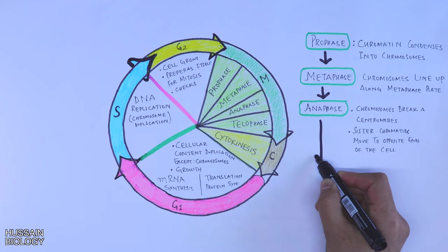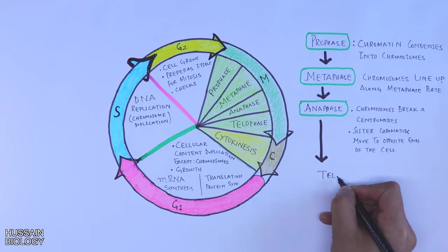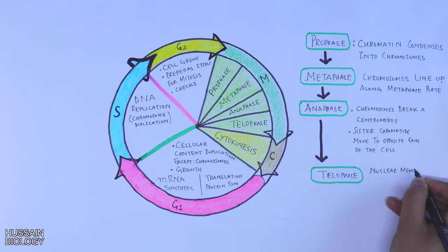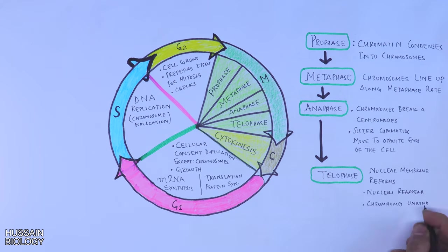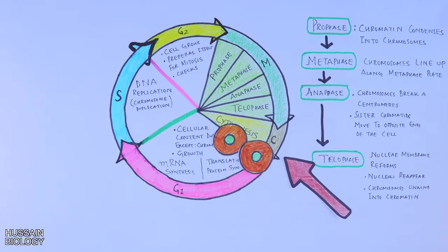At last we have the telophase of M phase, where the nuclear membrane reforms, nucleolus reappears, and chromosomes unwind into chromatin. Finally, of all these events, cytokinesis occurs, which is the actual separation of cells at the end by cytoplasmic division. If we see it in the diagram, at cytokinesis we get two daughter cells.